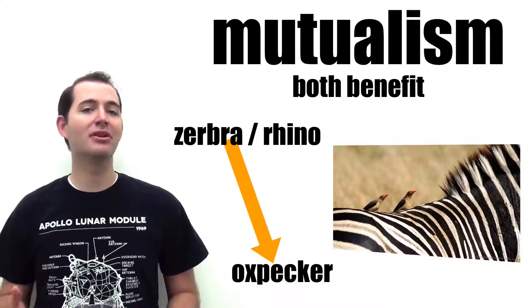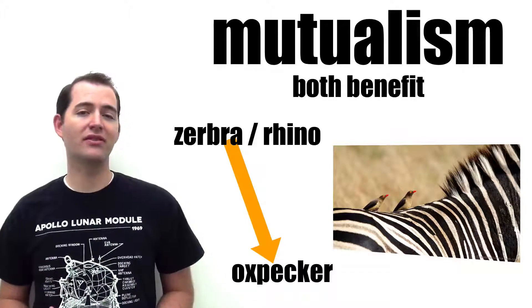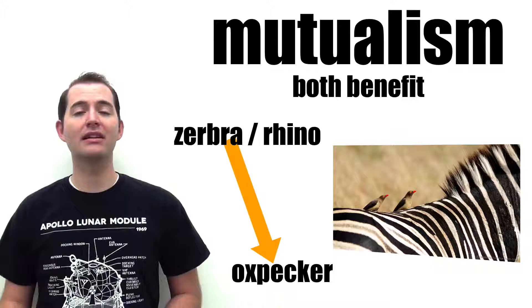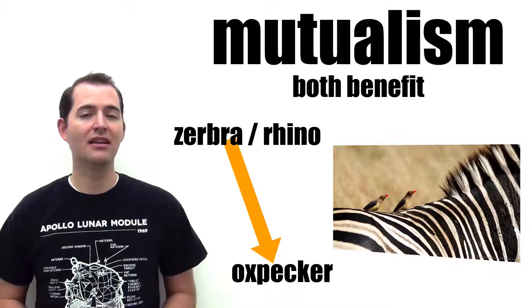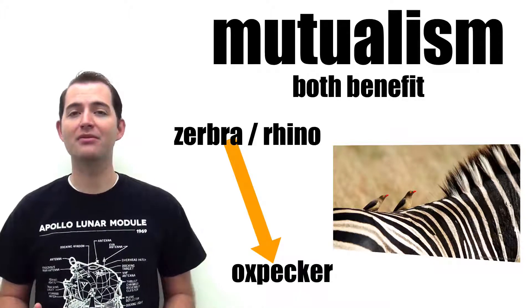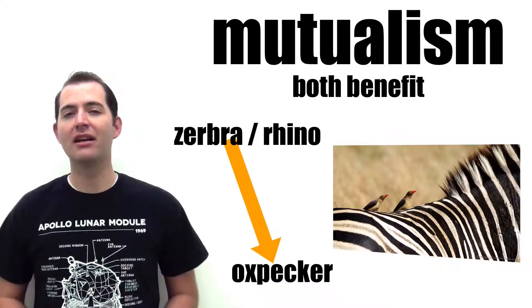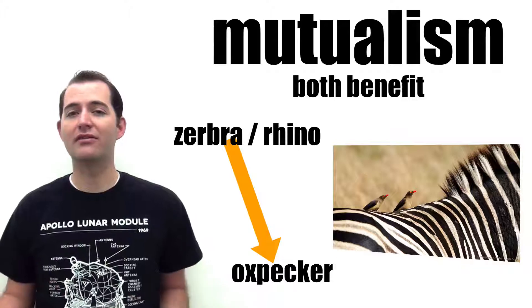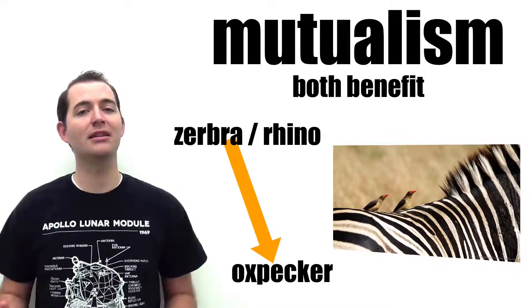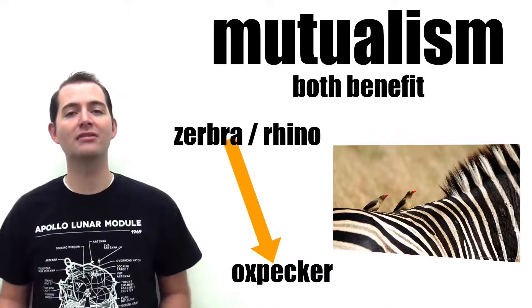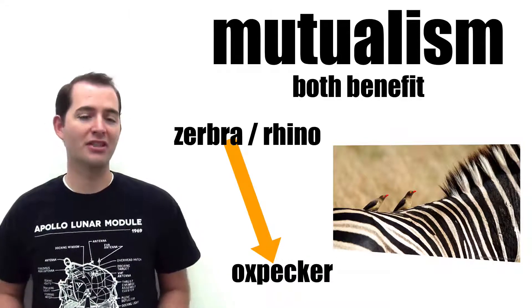The birds can also serve as a warning system to the larger animals. When the birds see danger coming, they will screech and fly off, and this warns the zebras or the rhinos of the approaching danger.